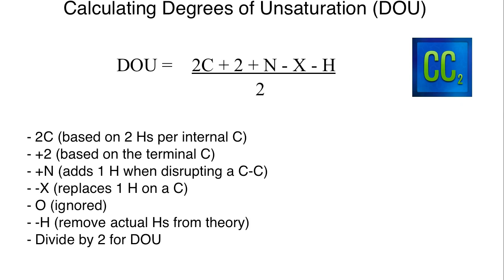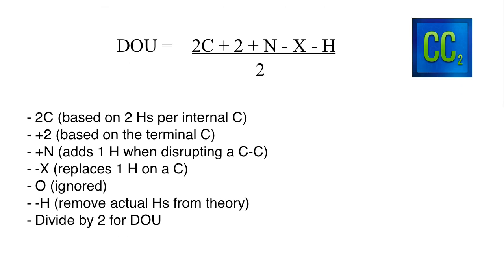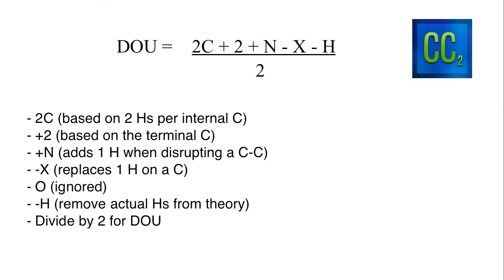Now let's talk about the reasoning for this formula. The 2C comes from two hydrogens per internal carbon. When I'm looking at a carbon chain, every internal carbon — when the compound is saturated — is going to be a CH₂, meaning it has two hydrogens per carbon. That's where the 2C comes from: we just multiply the number of carbons by two.